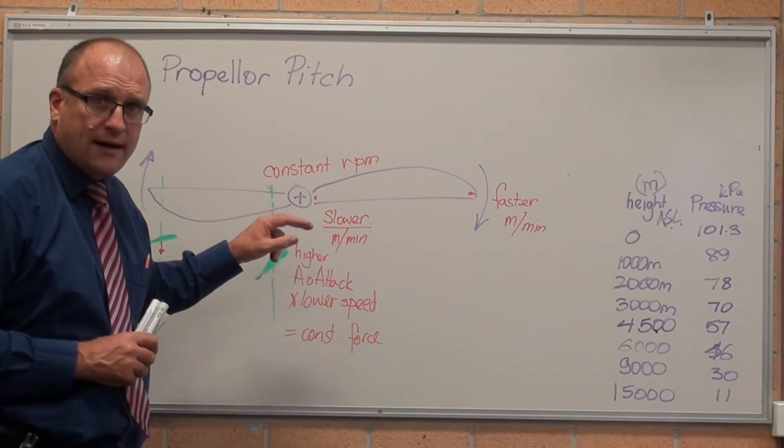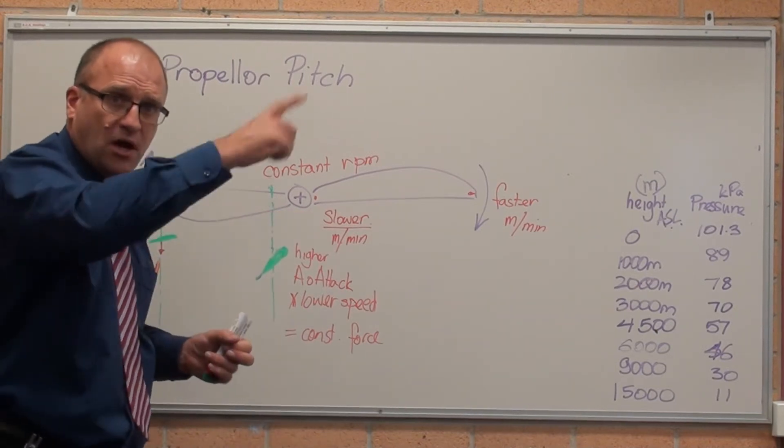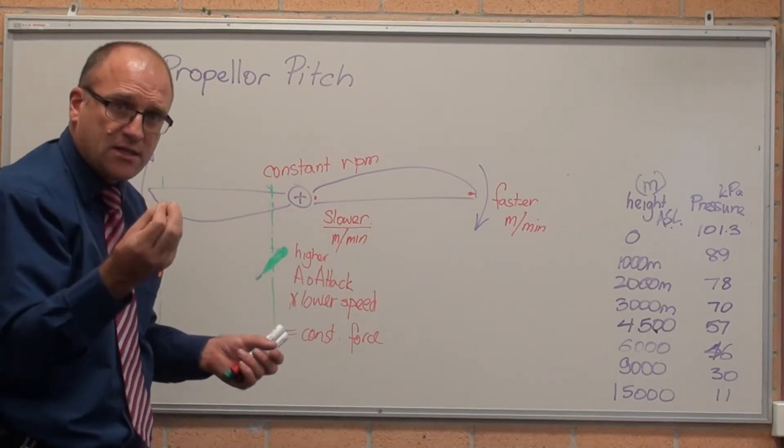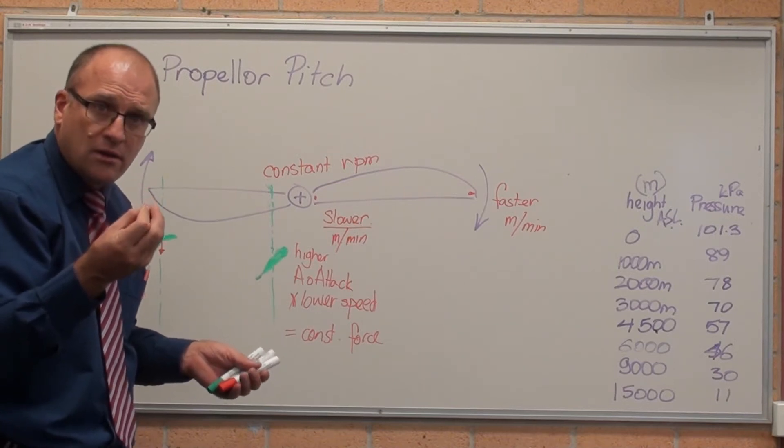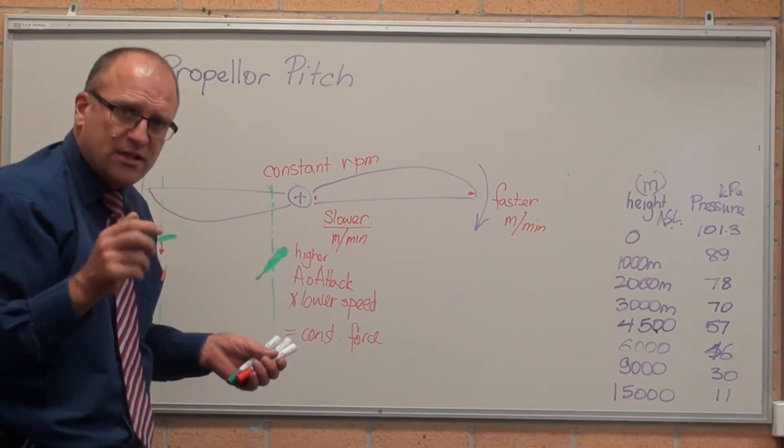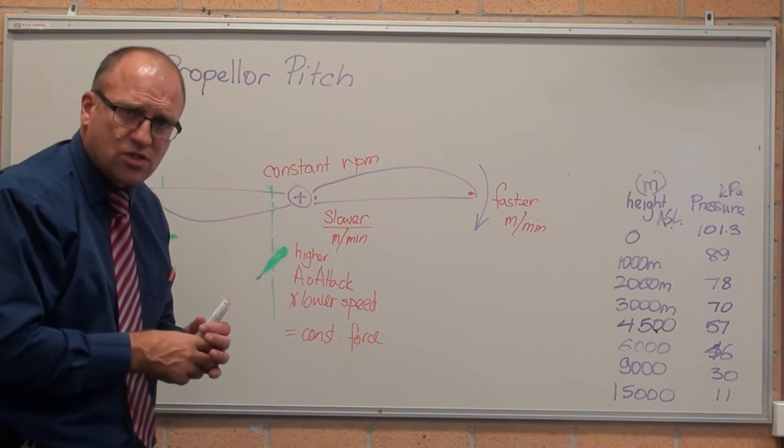Think of a push bike wheel as it's running down the road, the rim of the push bike on the outside travels a lot faster than the hub in metres per minute. It's still travelling at the same rotational speed.